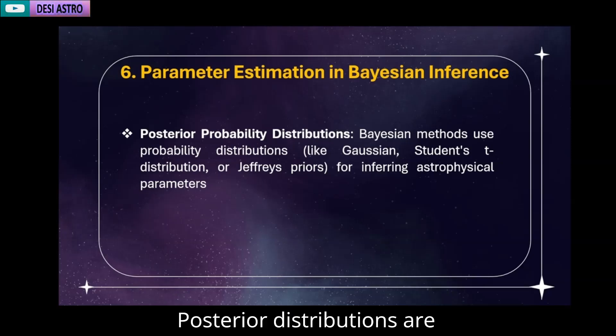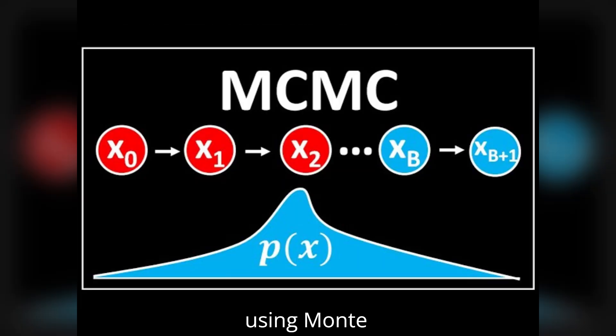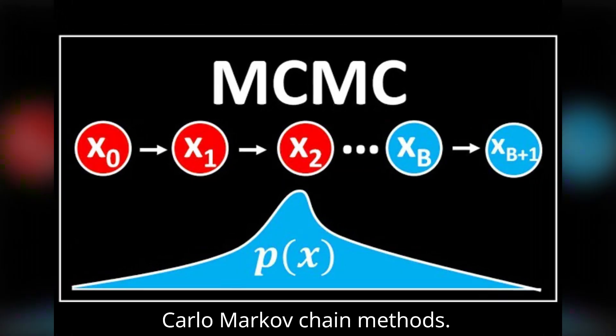Posterior distributions are often used for estimating GRB spectral parameters using Monte Carlo Markov chain methods.